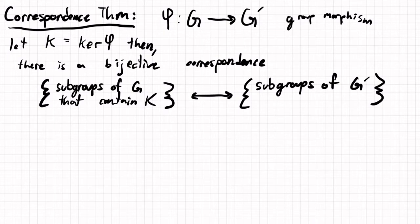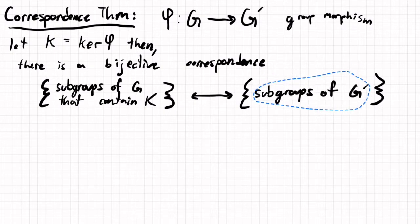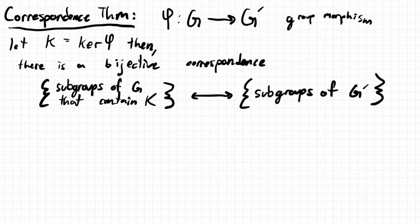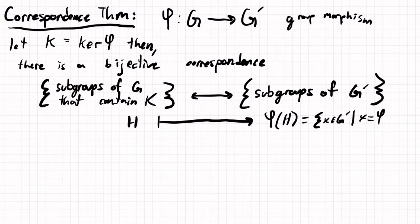And moreover, we can say exactly what the things that are going to correspond is. So if H is a subgroup of G that contains k, H will map to phi of H, this being the set of elements x in G prime,